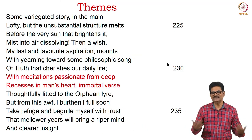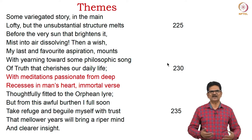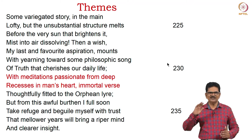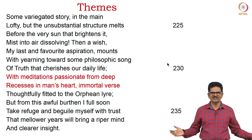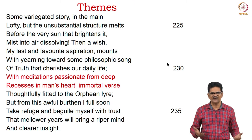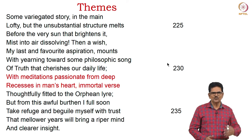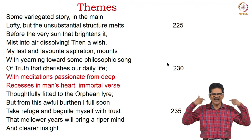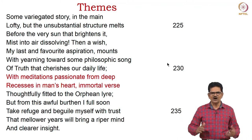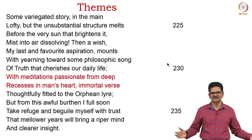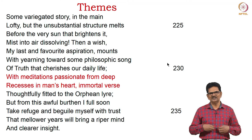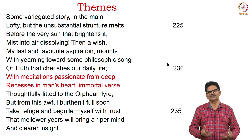Wordsworth continues exploring themes: 'Some variegated story, lofty but the unsubstantial structure melts before the very sun that brightens it, mist into air dissolving. Then a wish, my last and favourite aspiration, mounts with yearning towards some philosophic song of truth that cherishes our daily life with meditations passionate from deep recesses in man's heart, immortal verse thoughtfully fitted to the Orphean lyre. But from this awful burden I full soon take refuge and beguile myself with trust that mellower years will bring a riper mind and clearer insight.' It is a matter of time for Wordsworth to reach into the innermost parts of mind and heart to discover thoughts for his poems.